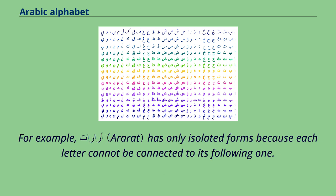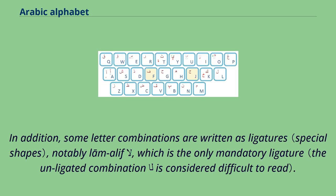For example, the word 'Eir Arat' has only isolated forms because each letter cannot be connected to its following one. In addition, some letter combinations are written as ligatures, notably Lam-Alif (La), which is the only mandatory ligature.